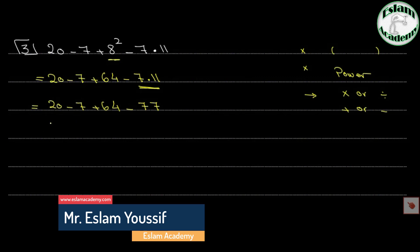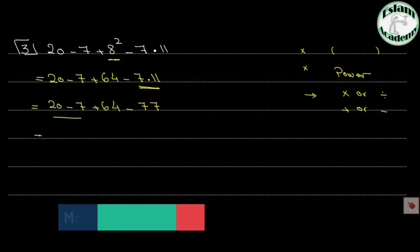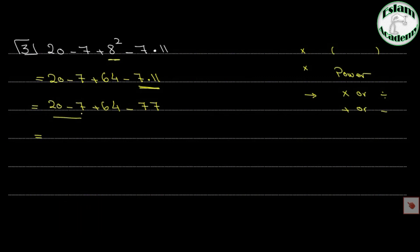Now we have minus, plus, and minus, so we solve left to right. 20 minus 7 equals 13, plus 64 minus 77. Then 13 plus 64 gives 77 minus 77, which equals 0.